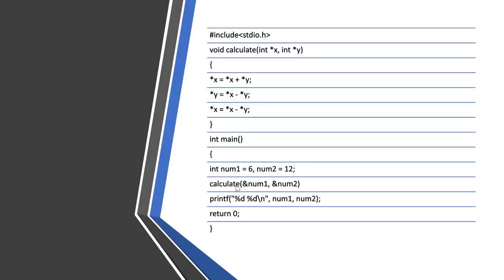In the calculate function, the address of num1 and num2 — that is, the address of 6 and 12 — will be passed. The star operator means they are dereferenced into values, so x points to 6 and y points to 12. Then: star x = star x + star y, meaning x = x + y = 6 + 12 = 18. Then y = x - y = 18 - 12 = 6.